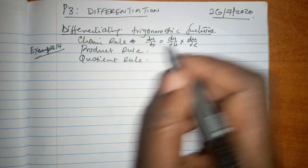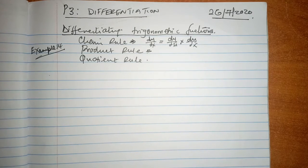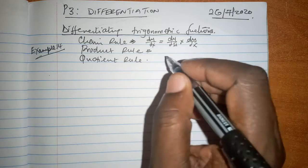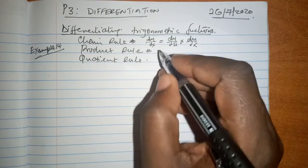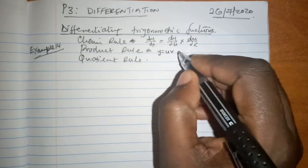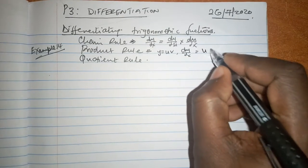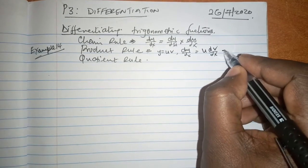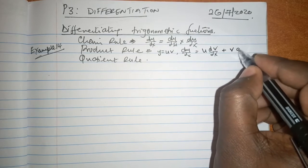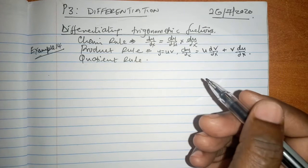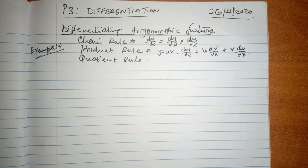We have talked about the product rule. All of us know that the product rule is given by: if you have y is equal to u times v, then dy/dx is equal to u dv/dx plus v du/dx. It is important to remind ourselves of the quotient rule as well.